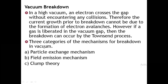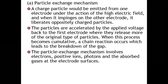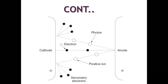There are three main categories for the breakdown process of vacuum: (a) particle exchange mechanism, (b) field emission mechanism, and (c) clump theory. In the particle exchange mechanism, a charged particle is emitted from one electrode under the action of a high electric field, and when it impinges on the other electrode it liberates oppositely charged particles. This can be explained using a figure showing cathode and anode.